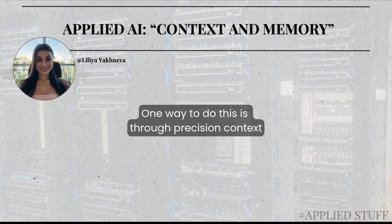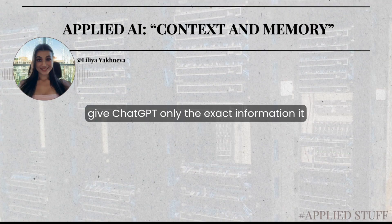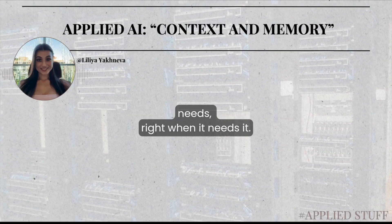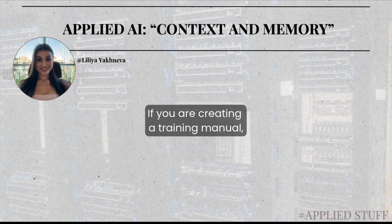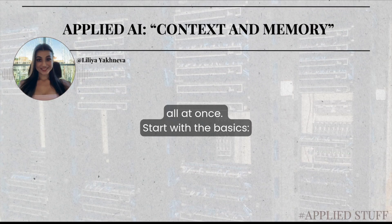One way to do this is through precision context injection. That's a fancy way of saying: give ChatGPT only the exact information it needs right when it needs it. If you are creating a training manual, don't dump the entire document into the chat all at once.